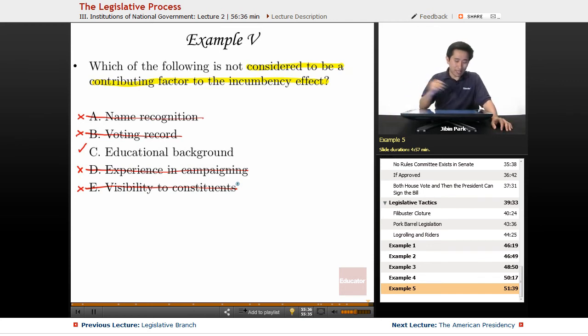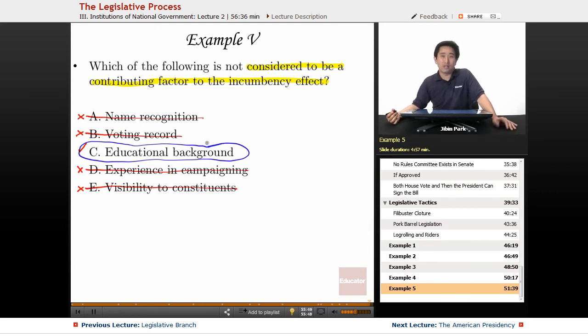So based on this elimination, there's nothing inherent about an incumbent having a better educational background. In fact, the example I gave in the previous lecture: Jay Chen versus Ed Royce. Ed Royce was a college graduate, he owned his business, graduated from Cal State Fullerton. So he did have a college background.